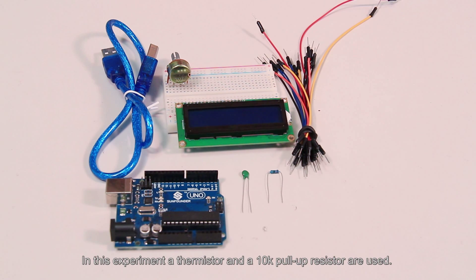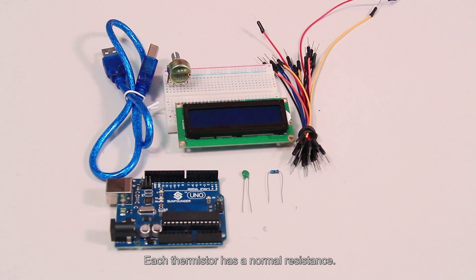In this experiment, a thermistor and a 10K pull-up resistor are used. Each thermistor has a normal resistance. Here it is 10K ohm, which is measured under 25 degrees Celsius.